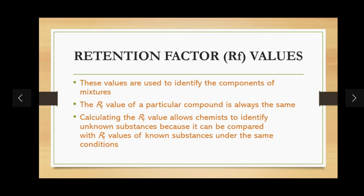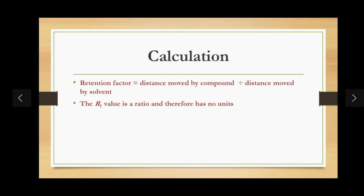If the liquid is colorless, the chromatography process is carried out exactly as before but a locating agent will be required to locate the separated spots in order to measure the RF values. To determine what each substance is, we need to calculate the RF value of each separated component on the chromatogram.